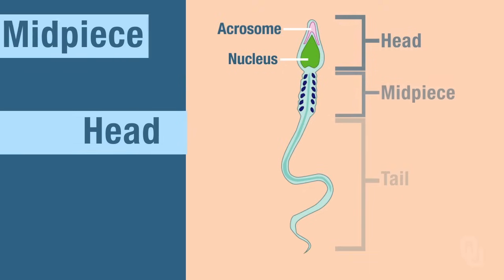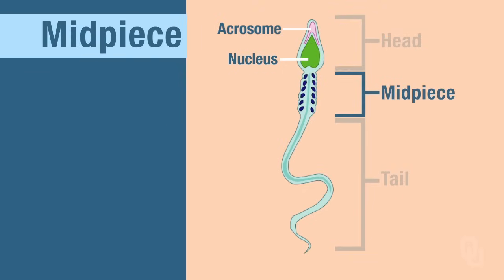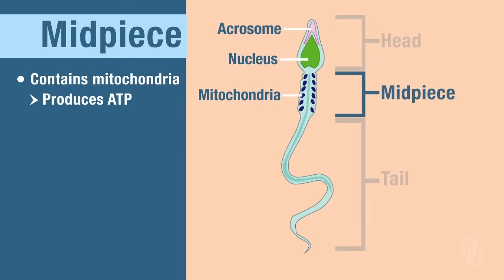Then there's the midpiece, the next region of the sperm, and the midpiece contains the mitochondria. Why are the mitochondria important for sperm? The mitochondria are the powerhouse for the cell, so they produce ATP. Sperm are motile, and they need the ATP in order to generate that energy to move.